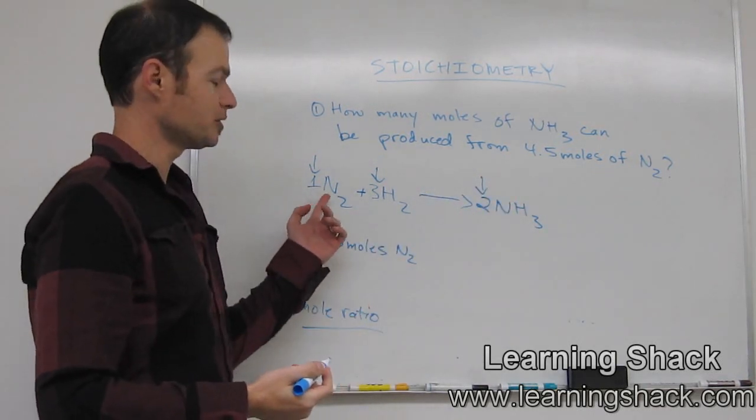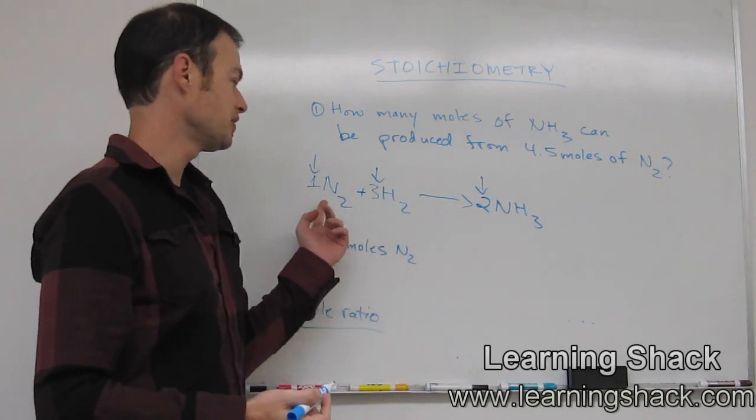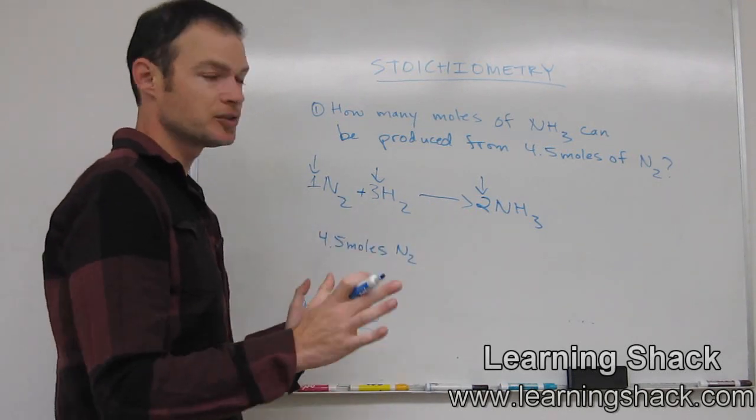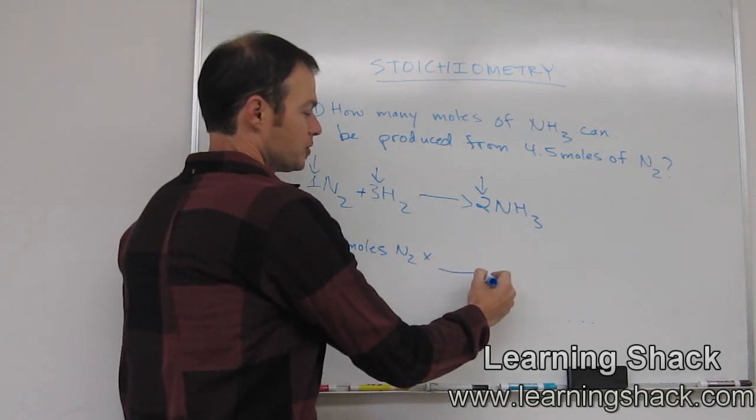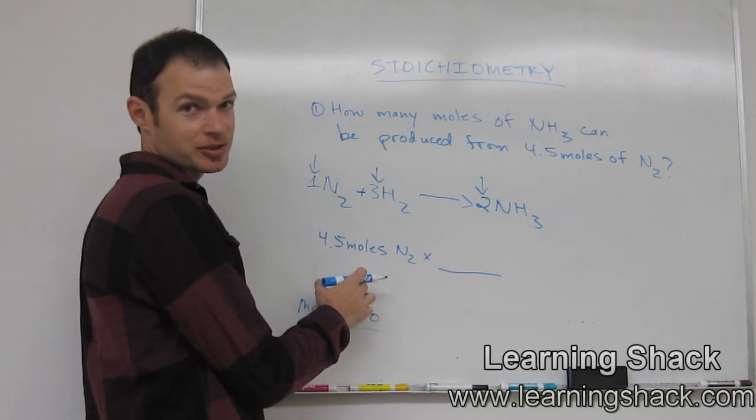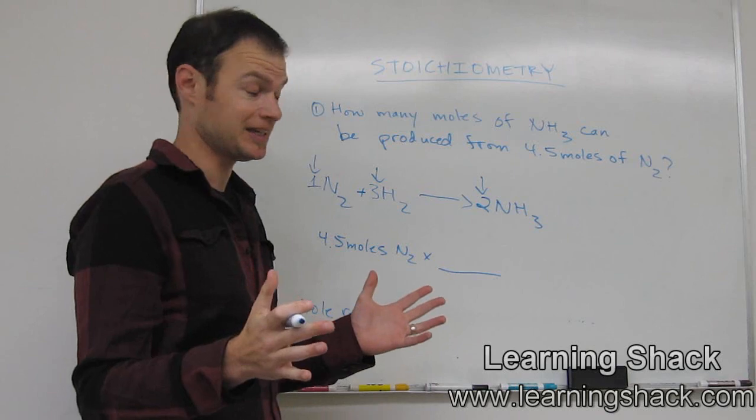So these numbers here represent the mole ratio. Our mole ratio, let's say, between nitrogen and ammonia is one to two. Between nitrogen and hydrogen is one to three. So this is what we're going to be using. So what we do is we make a little dividing sign right here, and we want to make sure that our units are going to cancel. That's the whole concept behind stoichiometry: units are going to cancel.